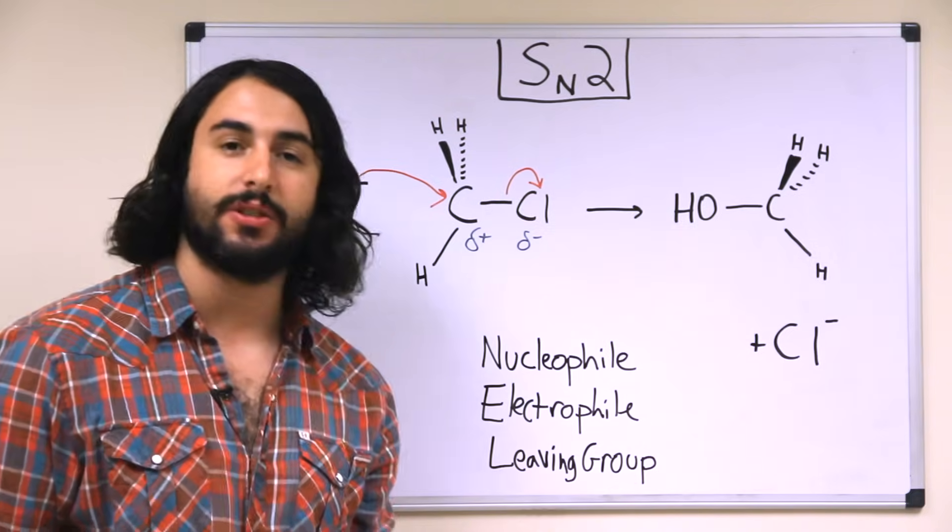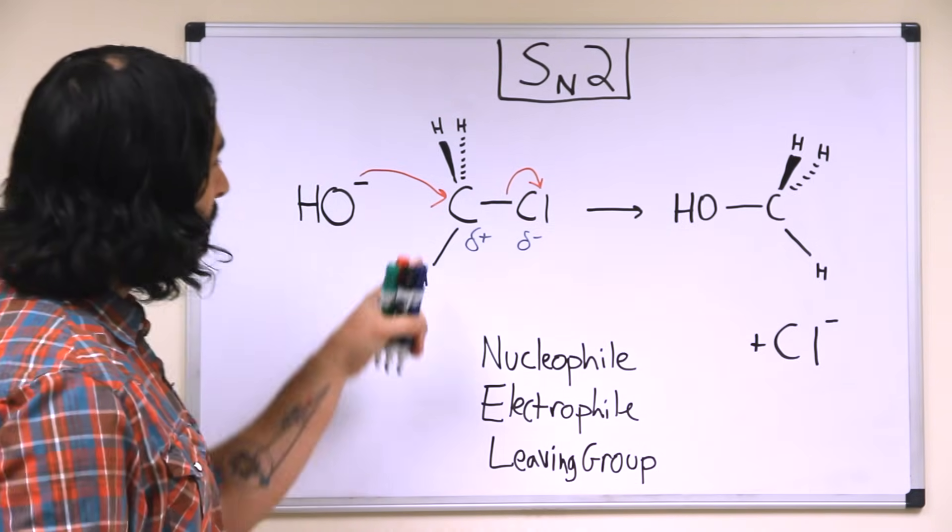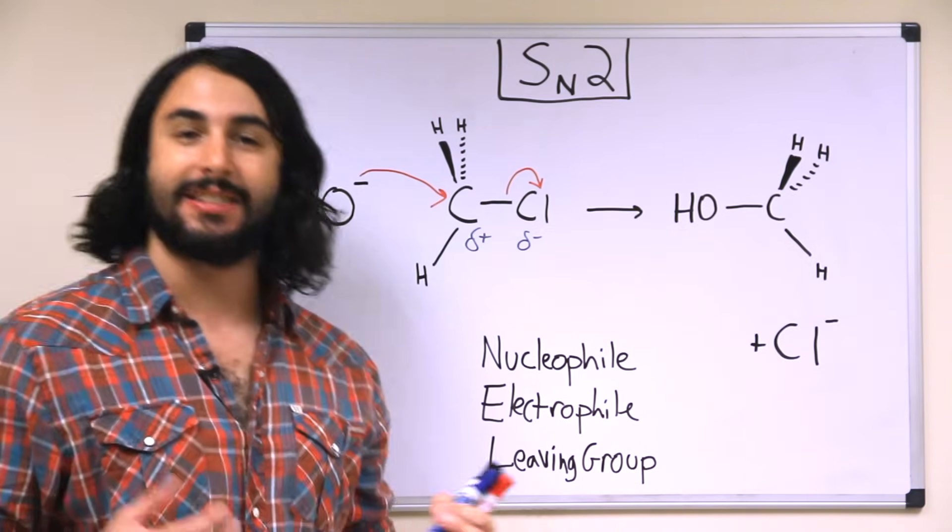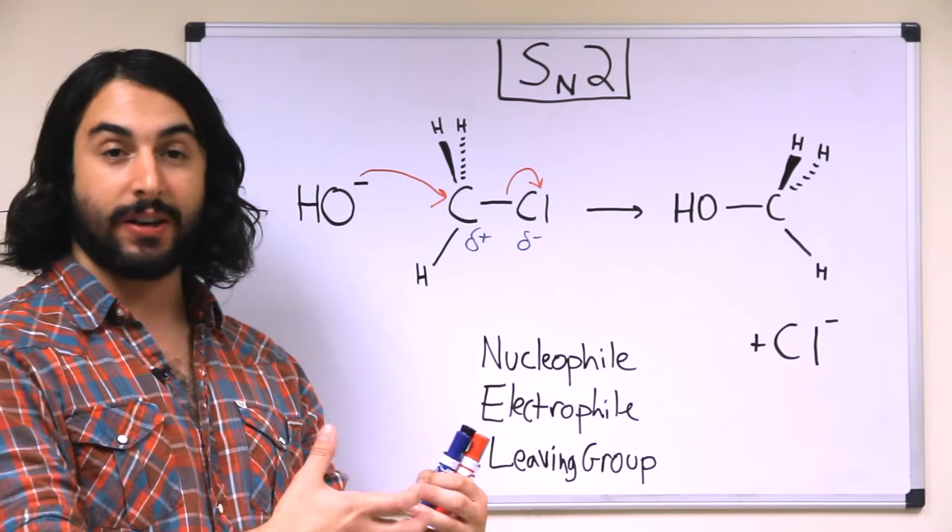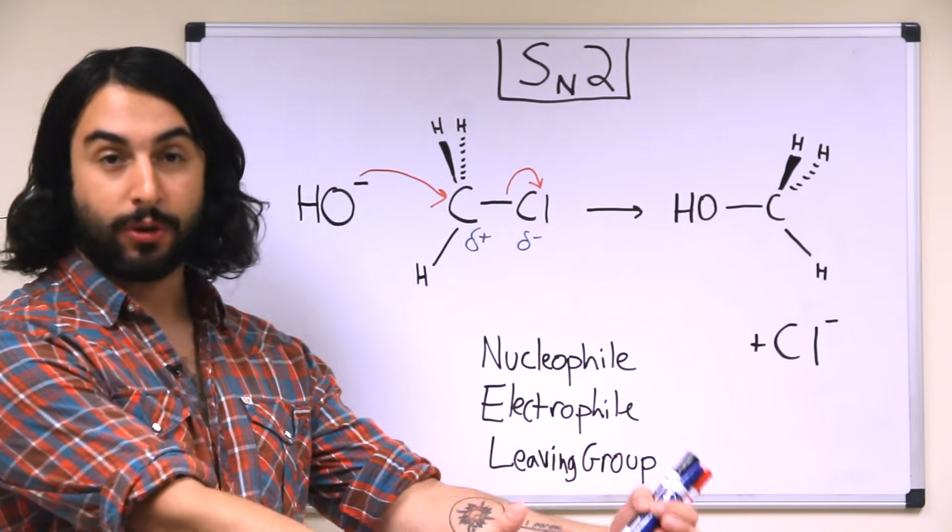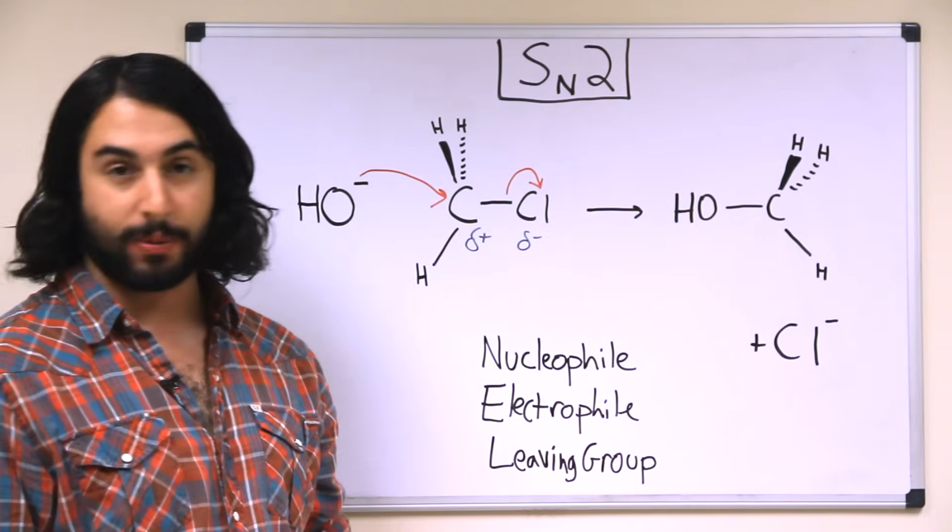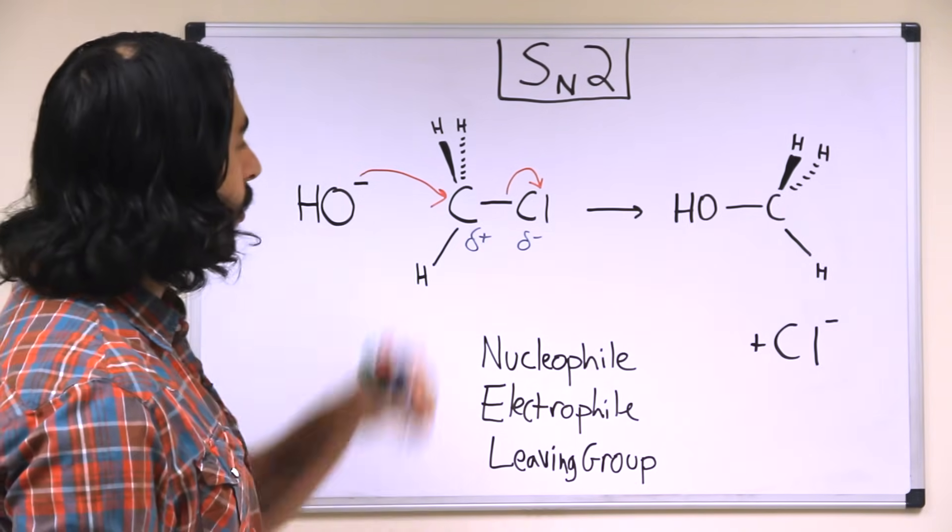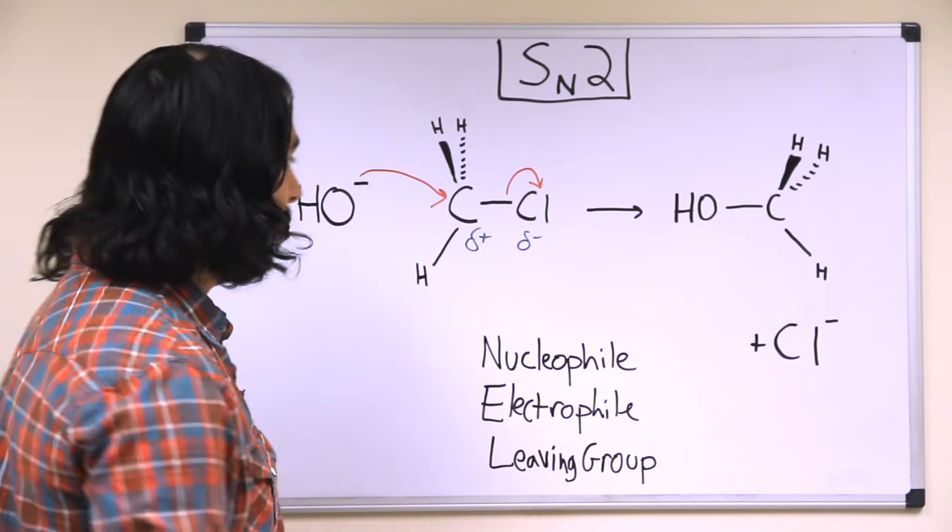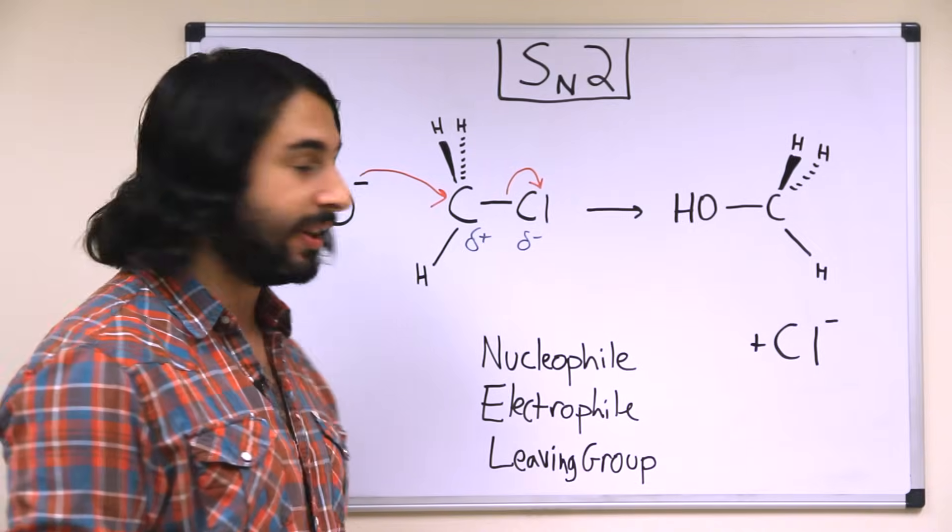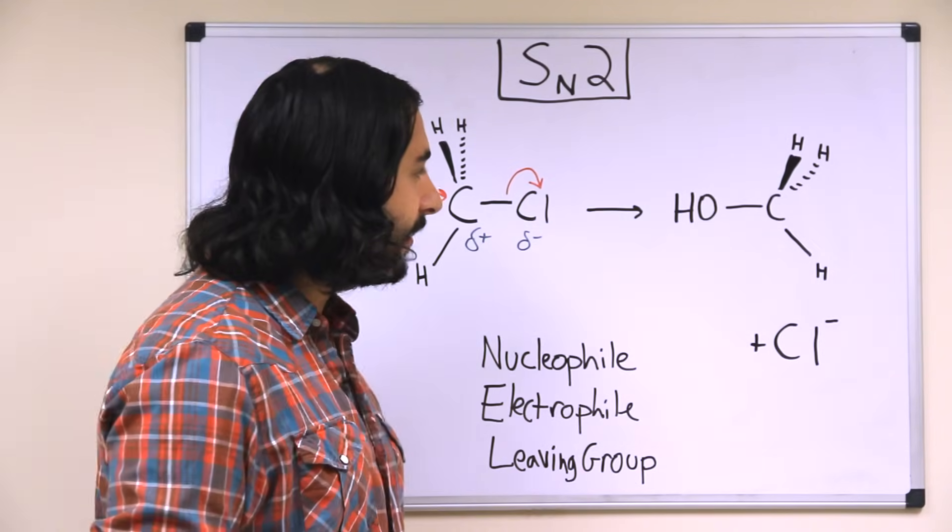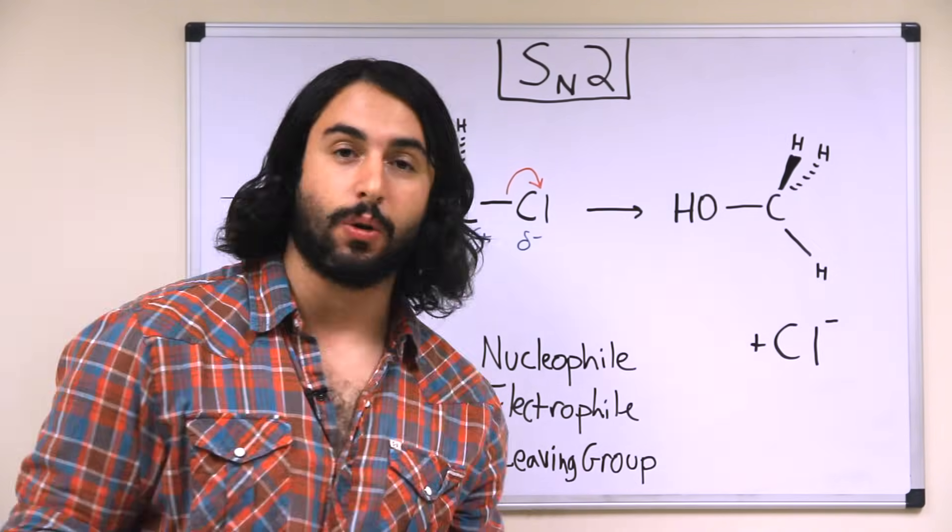And then lastly, every SN2 is going to have a leaving group because the only way that this carbon can accept a bond from an incoming nucleophile is if it then loses a bond to some other atom or group, because carbon can only have four bonds. And so the chlorine is the leaving group here. When the hydroxide attacks, the chlorine will leave, and at the end we have methanol and a chloride ion.